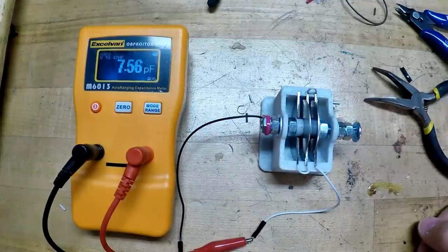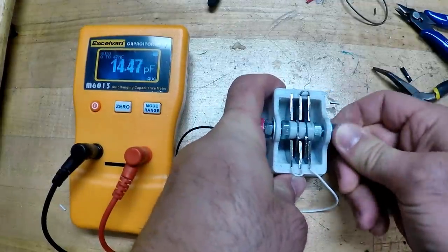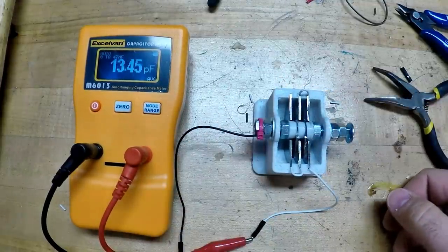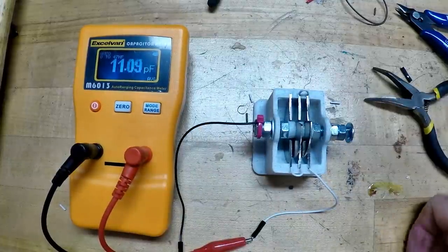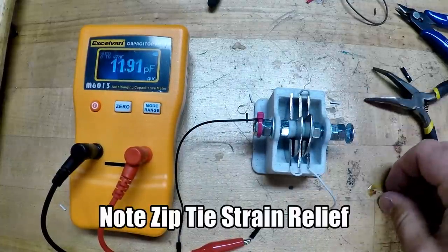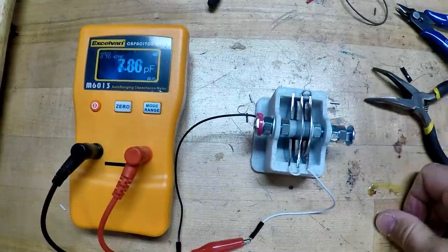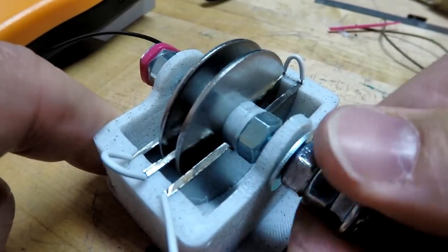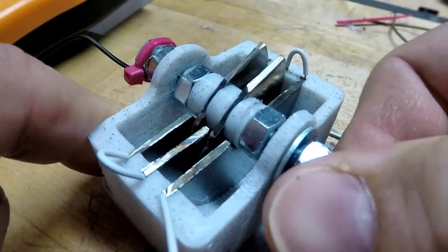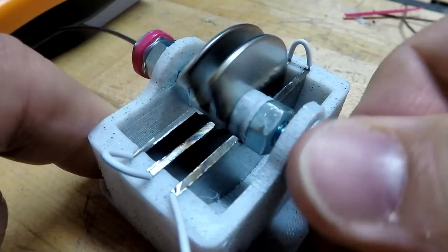You can see here with everything unaligned, it was under 10 picofarads, and then with it aligned, it was, you know, 13 or so, and then with it half aligned, around 11. You can see it here - it's a pretty pleasing motion. And if you needed more, you could just add more leaves to this or make them closer to each other.